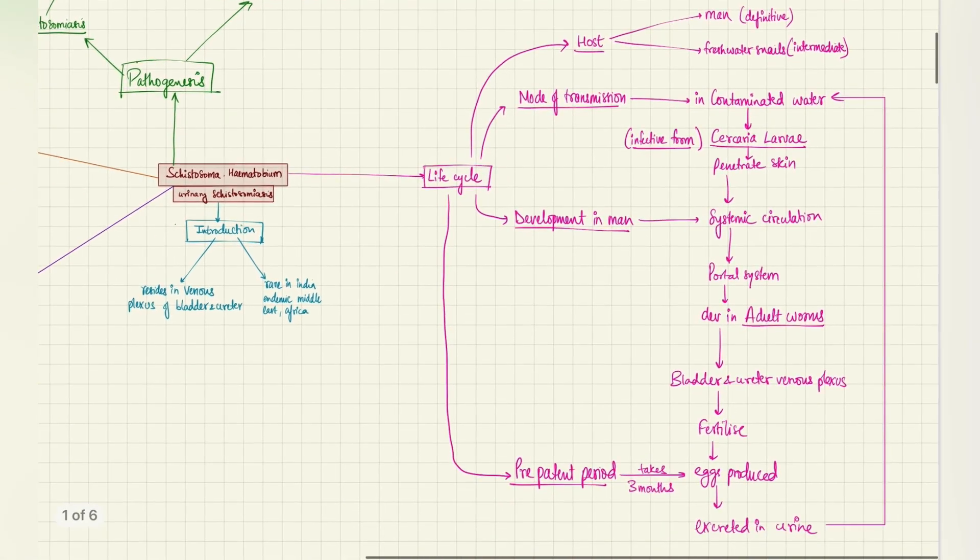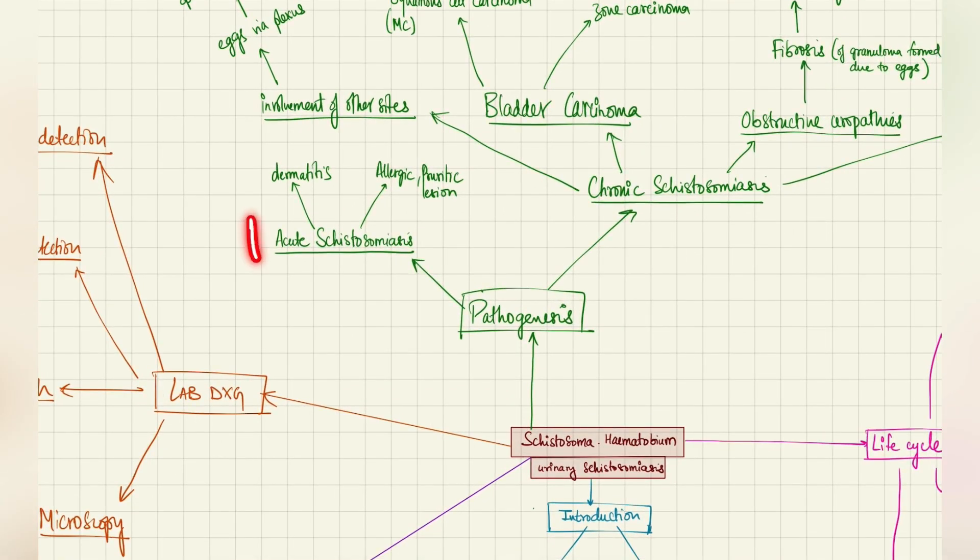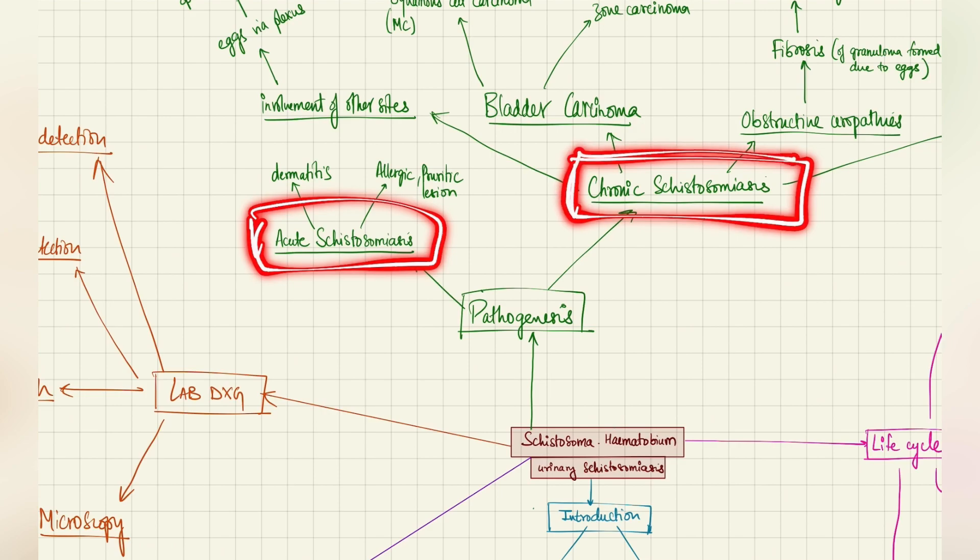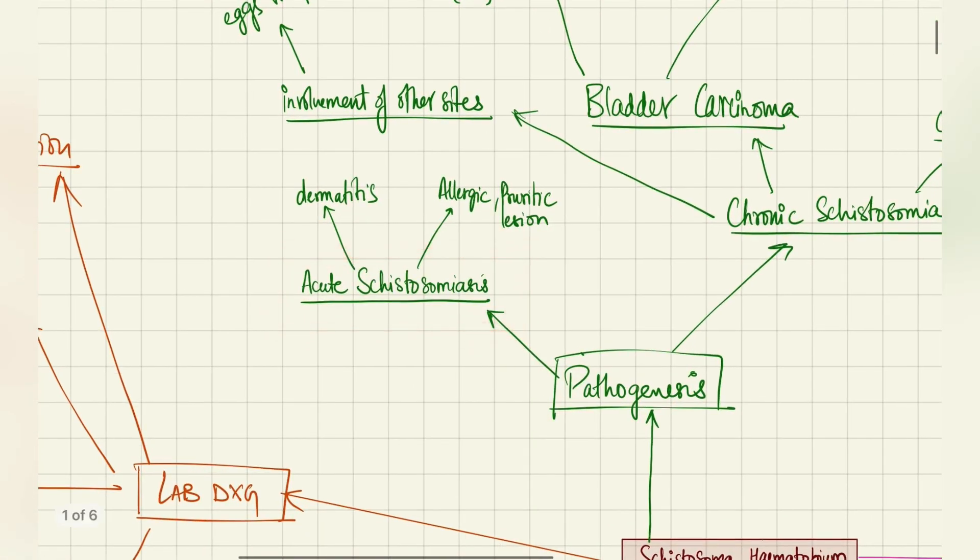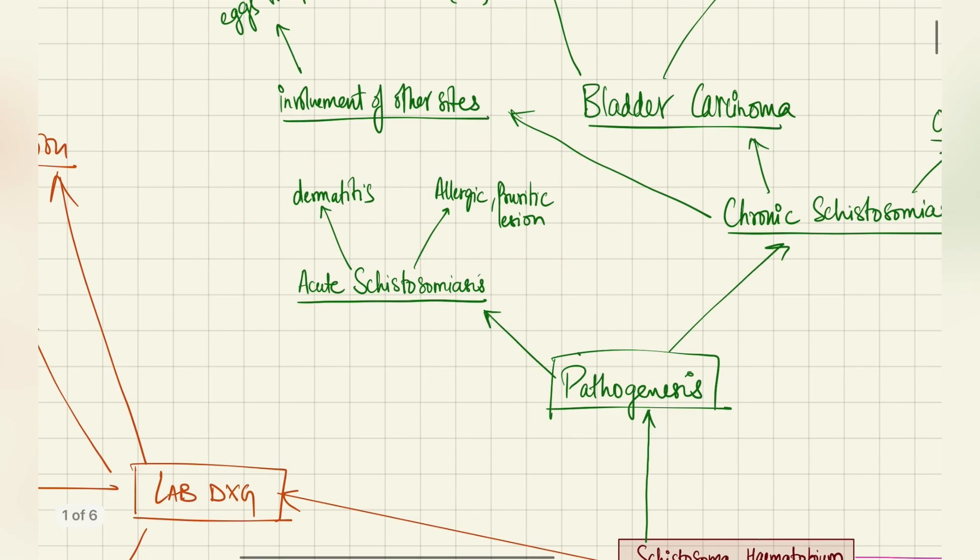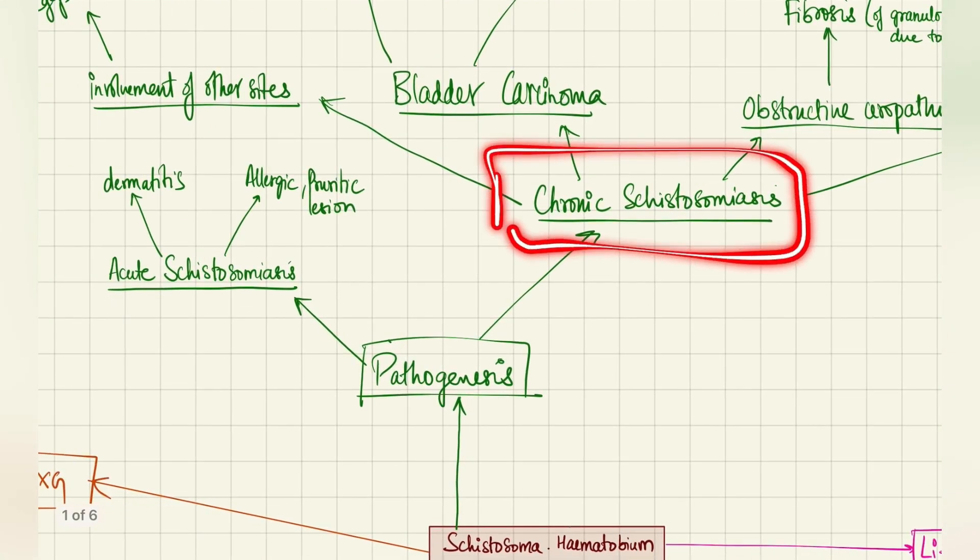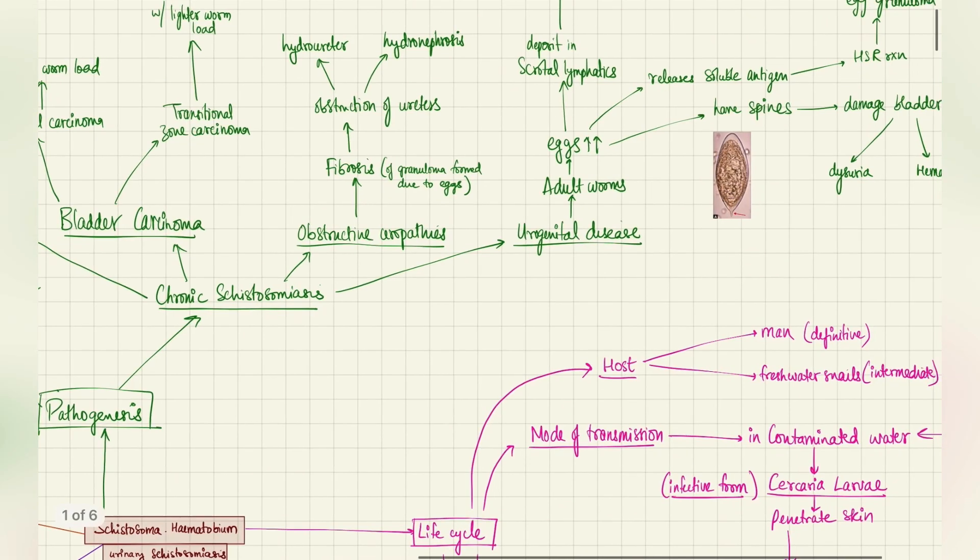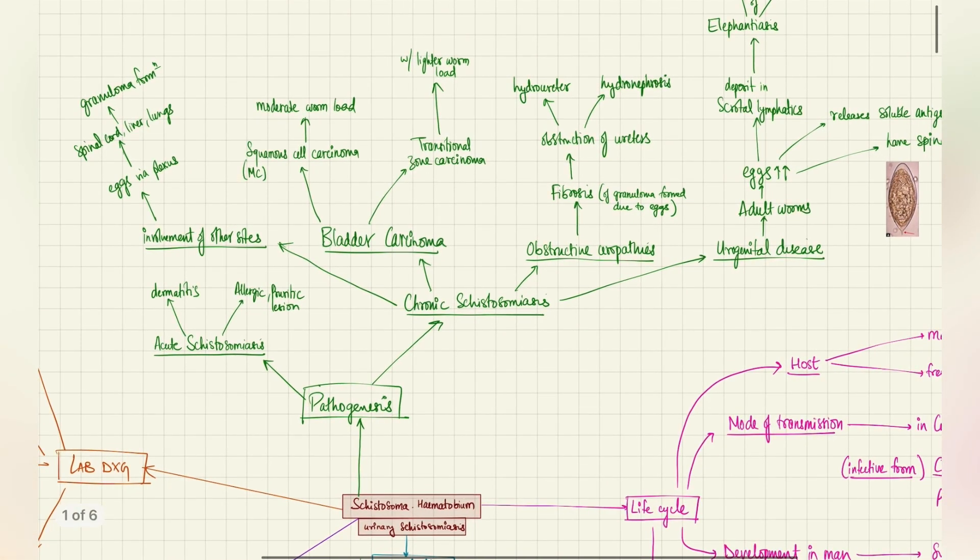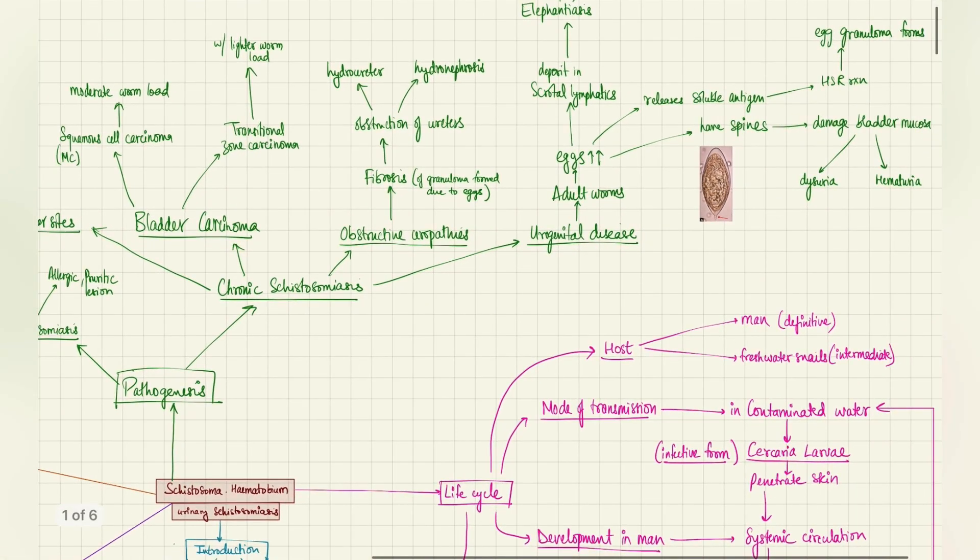So this is the life cycle. After life cycle, if that's clear, let's talk about the pathogenesis briefly. Pathogenesis will cause acute schistosomiasis and chronic schistosomiasis. Acute schistosomiasis is a less severe condition compared to the chronic one. Acute will consist of dermatitis and allergic or pruritic lesions. There are no other major systemic manifestations, just dermatitis, allergic and pruritic lesions. Next, coming to chronic schistosomiasis, which is a major disorder. Here we'll see various pathologies like urogenital disease, obstructive uropathies, bladder carcinoma risk, and involvement of other sites.